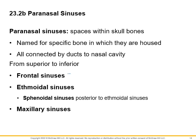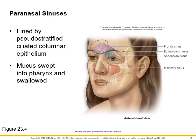Paranasal sinuses — we're not going to name all of them, but I want to show you where they are. You can see the frontal sinus, maxillary sinus, and some sinuses behind the eye. If you have sinus issues and feel pressure behind your eye, it's probably due to the ethmoidal and sphenoidal sinuses. The mucus from these sinuses can be swept into the pharynx and swallowed.